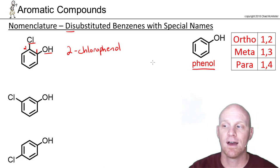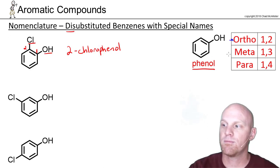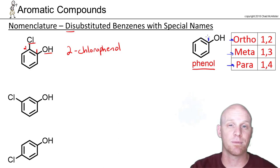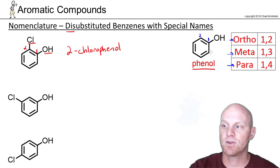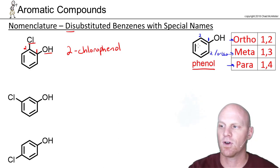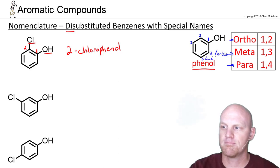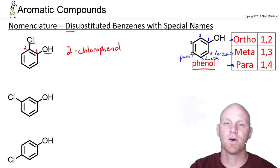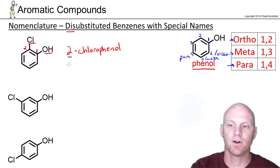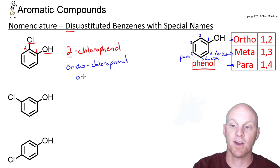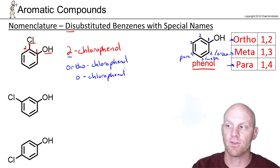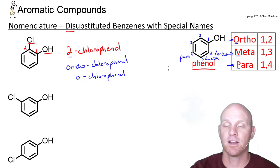There's another naming convention using ortho, meta, and para for disubstituted benzenes with a special parent name. Position two is called the ortho position, position three is meta, and position four is para. So 2-chlorophenol can also be called ortho-chlorophenol, or o-chlorophenol for short. These abbreviations — O, M, and P — stand for ortho, meta, and para depending on which positional relationship you have.